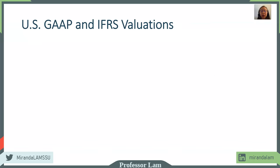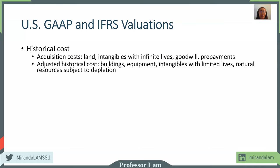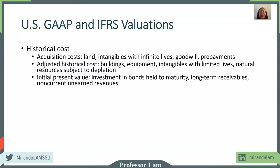Now let's look at what US GAAP and IFRS say about valuations. For historic cost, the most obvious is acquisition cost, applying to land, intangibles, and prepayments. In addition, an adjusted historic cost can be used for buildings, equipment, and natural resources subject to depreciation — a depreciated historic cost. Another form of historical cost is initial present value: if you purchase a bond, the price you pay is not the nominal value but the present value — the actual cash paid.